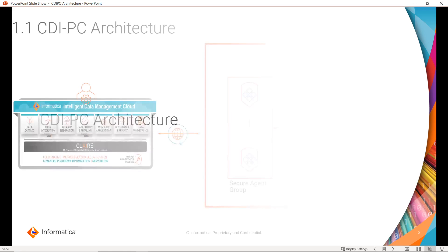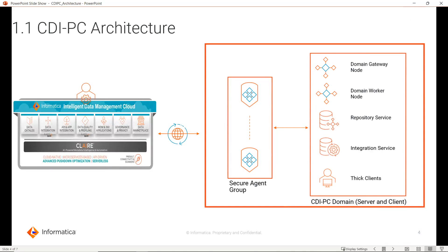CDI PC architecture. On a very high level view, the CDI PC architecture will look like this. On the right-hand side, this is the same as the on-prem PowerCenter domain, where we can have multiple nodes that can be gateway or worker nodes, with multiple services like repository service or integration service. We will have all the thick clients like PowerCenter repository manager, workflow manager, designer, and monitor. We will have a secure agent as well.